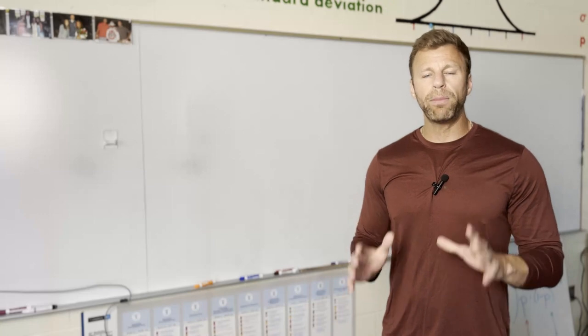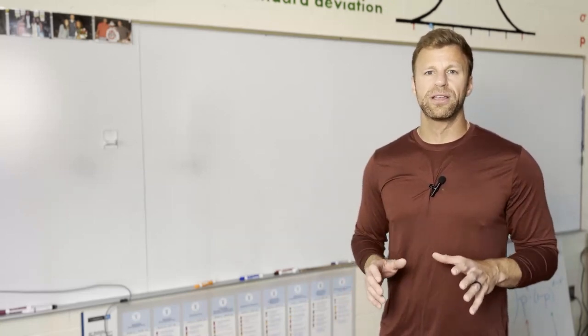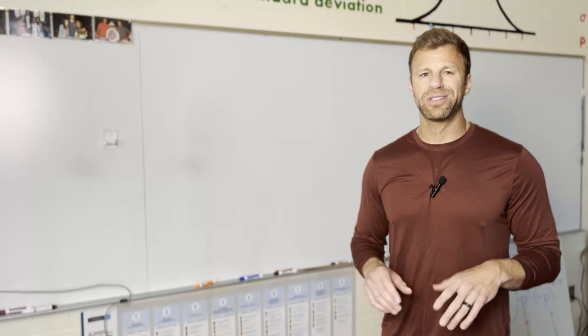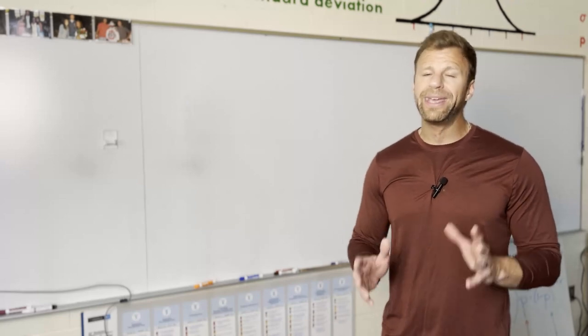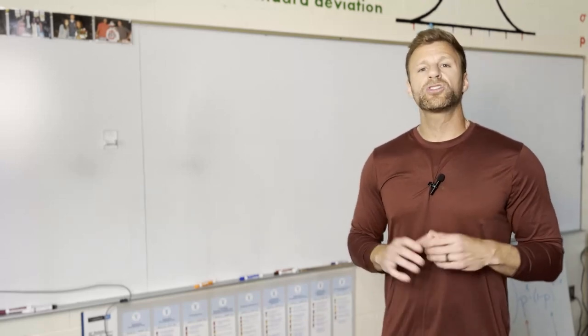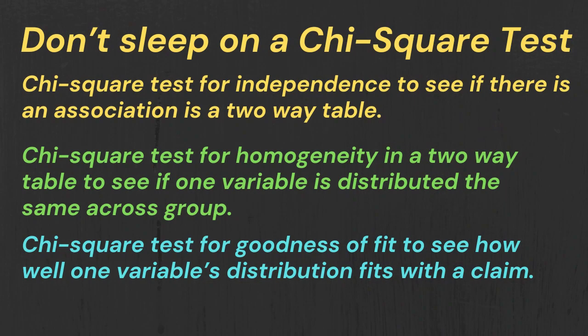So again, problem four is going to be about inference, so make sure you know those procedures. Now the final thing that it could be is a chi-square test as well. So make sure you're familiar with a chi-square test for homogeneity, a chi-square test for independence, which means you see a two-way table and you're asked about an association or you're asked about if there's a difference between your samples.